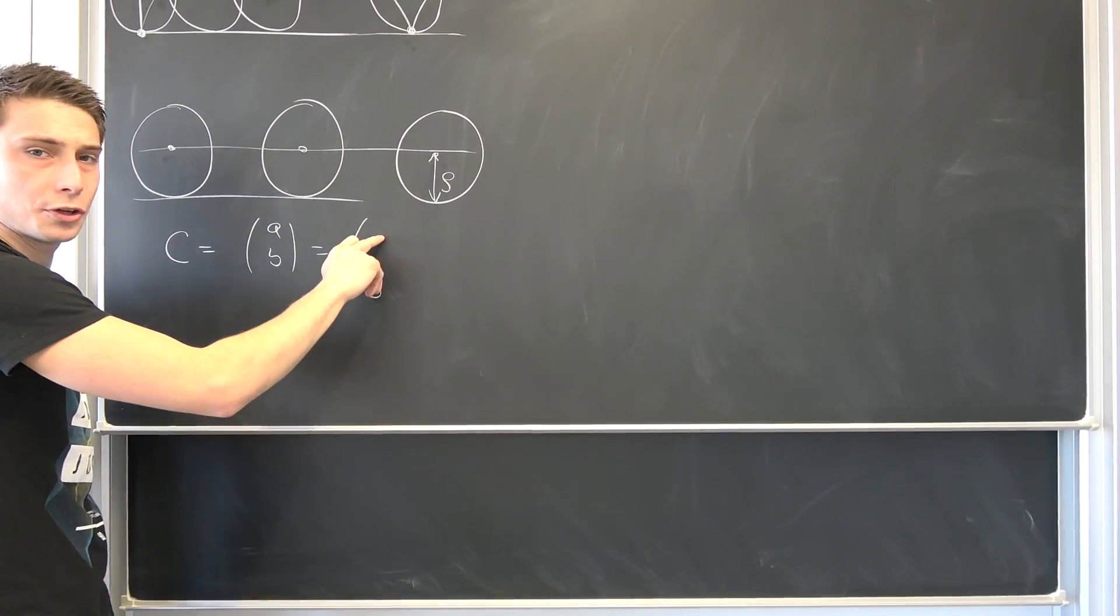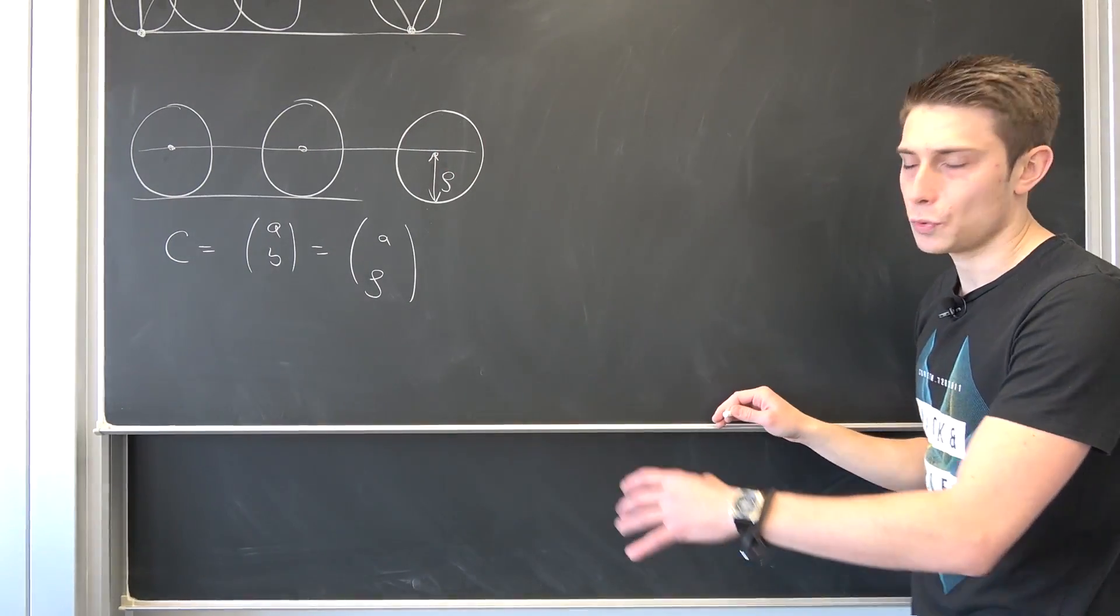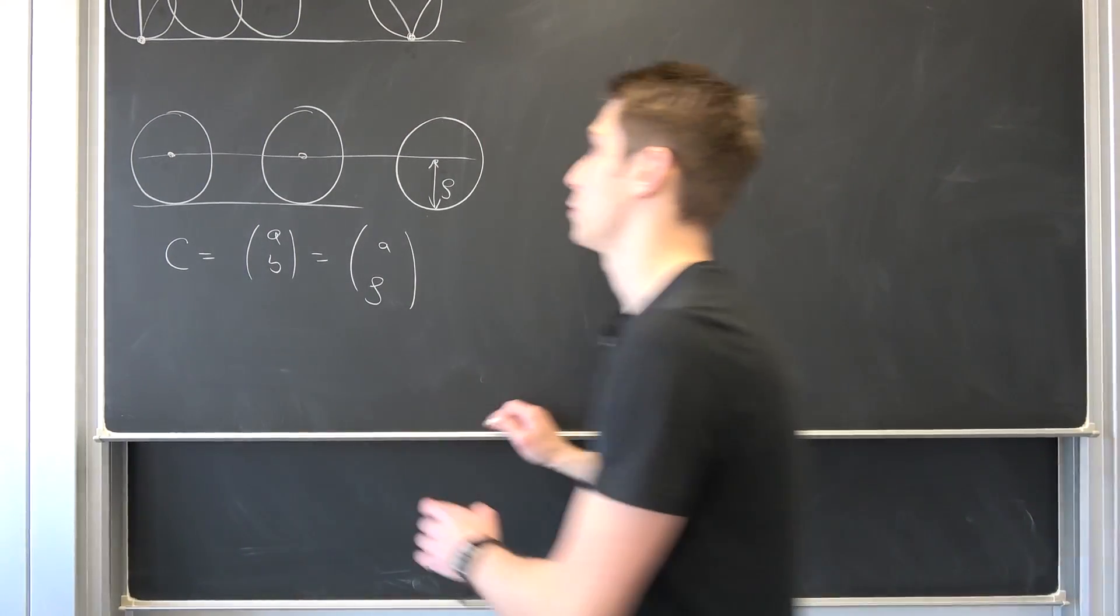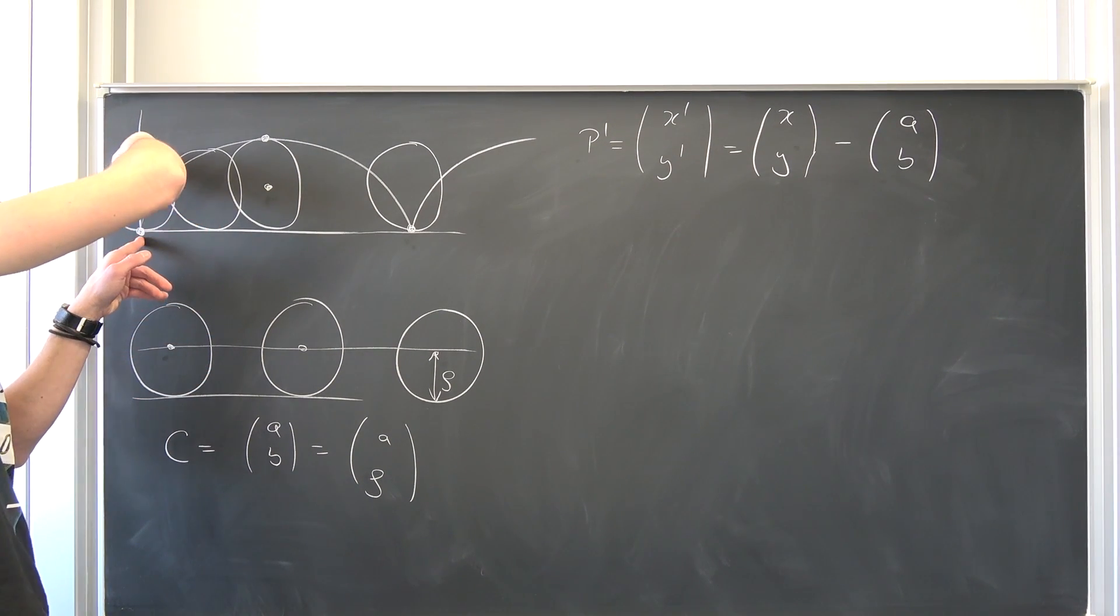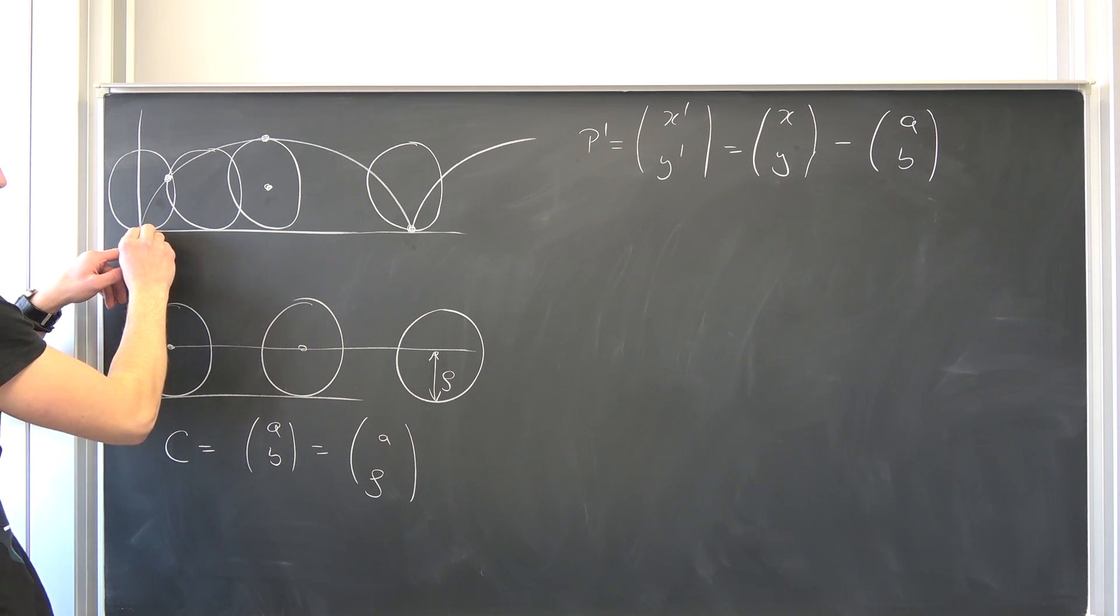But what about this up here, our x coordinate? What about that? Well, we can talk about this kind of intuitively, actually, because you see at first our circle is somewhere here, then it's going to roll a little bit.